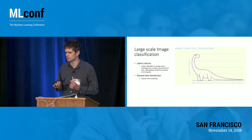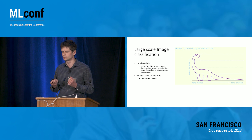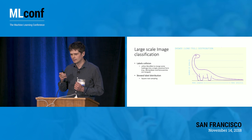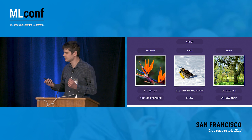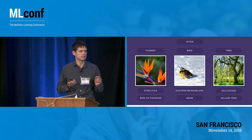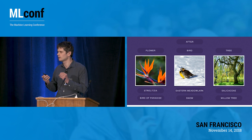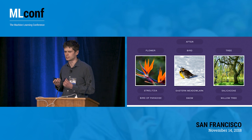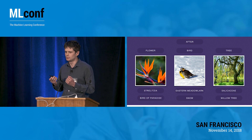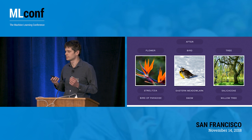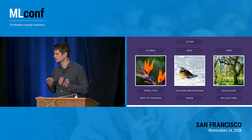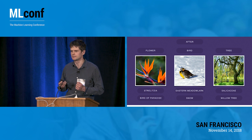For skewed label distribution, you can use techniques like square root sampling. Once you train this neural network, instead of just having ImageNet classification predictions like 'flower,' 'bird,' and 'tree,' you get more precise classification: for this flower, it's going to be a strelitzia; instead of 'bird,' an eastern meadowlark; or specifically a willow tree. It's a great improvement that we showed and published at ECCV this year.